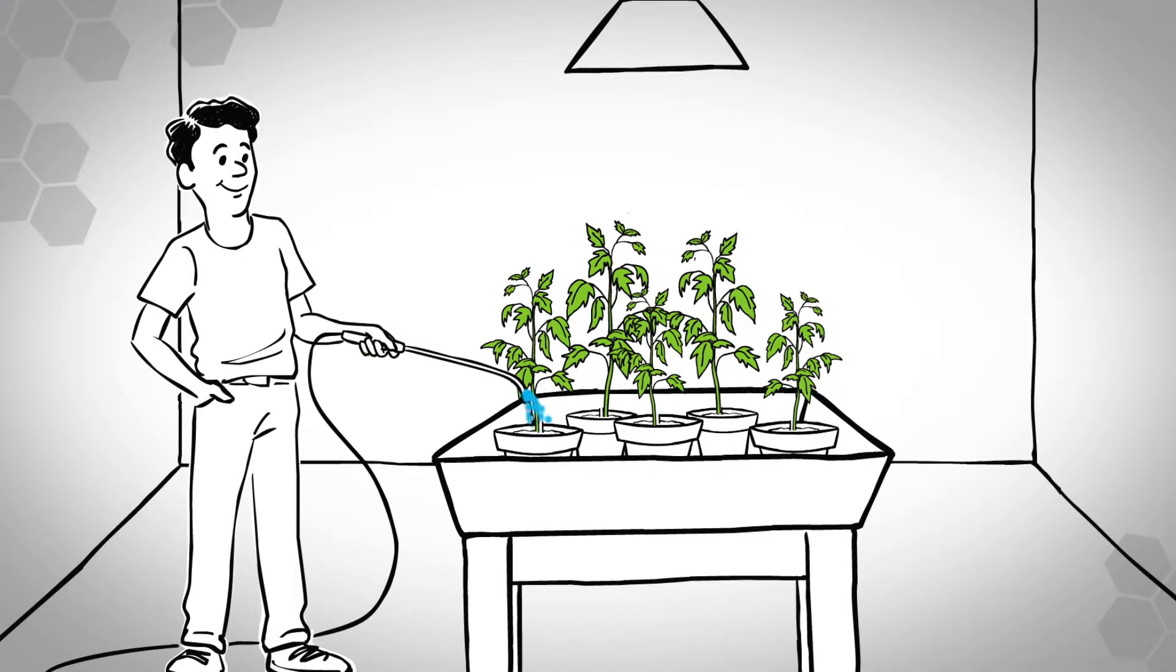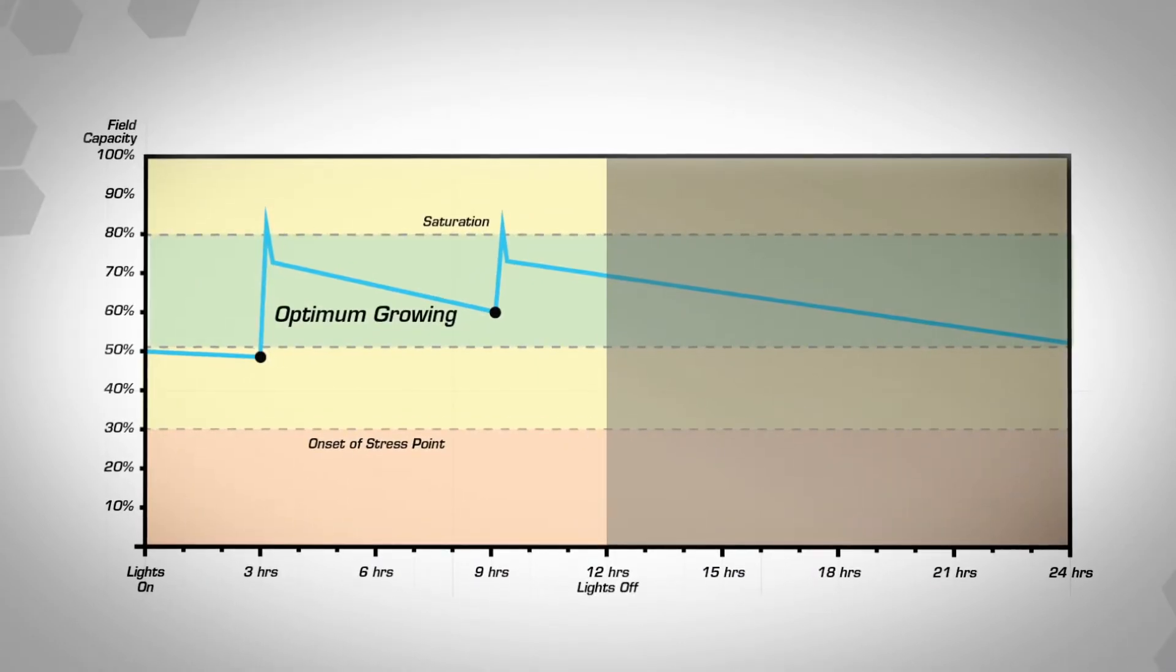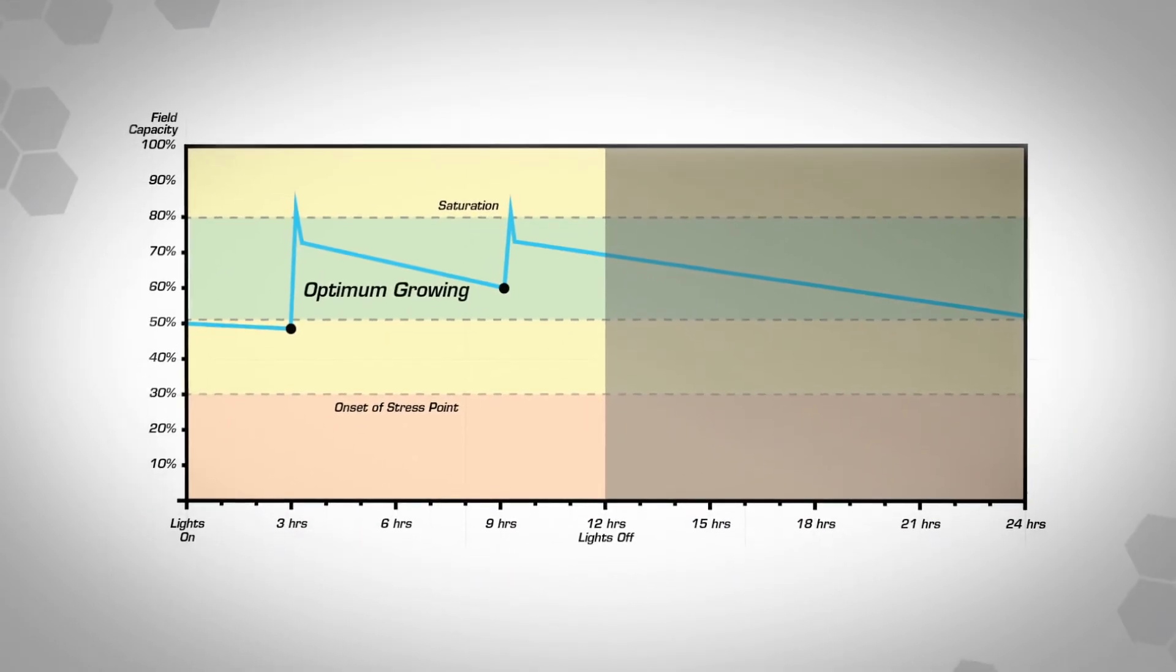By tracking your root zone temperature, water content, and your dry down rate, you can develop the irrigation strategy that works best for your plants. Fine-tuning what goes on below the surface is only going to improve your results above.